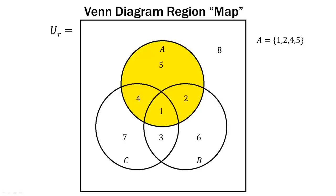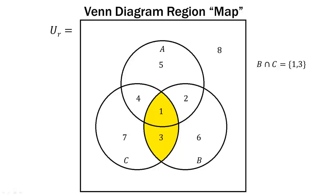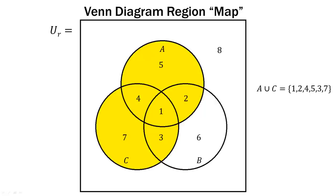What regions make up B intersect C? Looking at B and C at the bottom, they intersect in that football shape, and those are regions 1 and 3. How about A union C? The union is everything in either or both. A is regions 1, 2, 4, and 5. Then we add the things that are in C: regions 7 and 3. So A union C consists of regions 1, 2, 4, 5, 3, and 7. The order you write them in does not really matter.